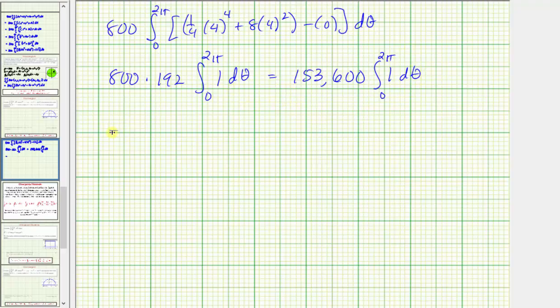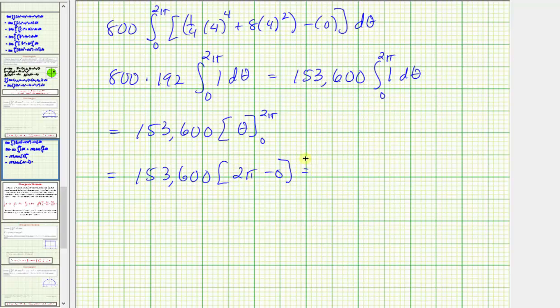Now we integrate with respect to theta. We have 153,600 times theta. Evaluating, we have 153,600 times 2 pi minus 0, which is equal to 307,200 pi, or as a decimal approximation, approximately 965,097.2632.